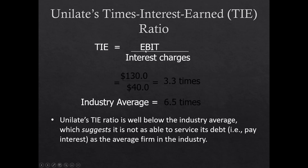Times interest earned equals EBIT divided by interest charges: $130 million / $40 million = 3.3 times; industry average is 6.5 times. Because borrowings are higher and EBIT is lower, times interest earned is significantly worse than industry average. This suggests Unilate is not as able to service its debt as the average firm — more debt, lower EBIT, resulting in lower debt service capacity.